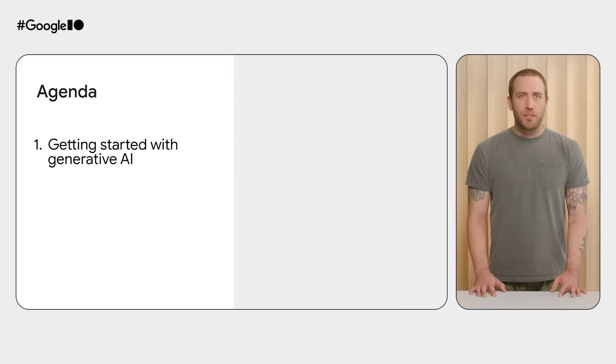We didn't have much experience building apps that use AI before preparing for this talk, but using tools like the Google AI SDK for Dart, we were able to get up and running and build an app that uses the Gemini API in no time. In this talk, we're going to walk you through our journey of building a cooking app that uses generative AI as the backend.